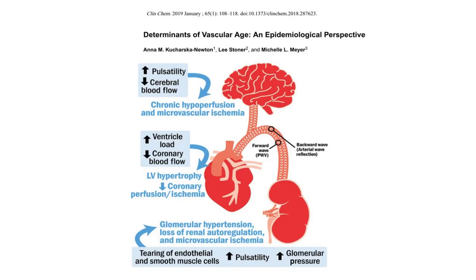If arterial stiffness increases — particularly at the level of the aorta — this will adversely affect pulsatile hemodynamics. In particular, we will see an increase in pulsatile stress towards end organs including the brain, and there will be greater arterial wave reflection with a resultant increase in myocardial load. Basically, the heart will have to work harder to perform a given amount of work.